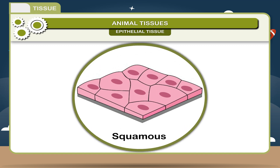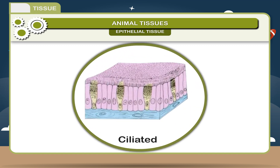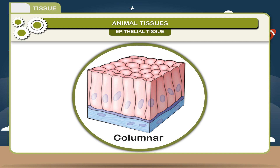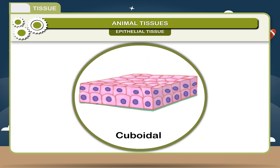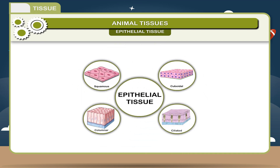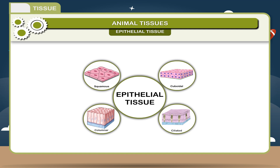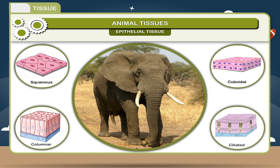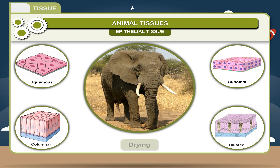The four types are: Squamous epithelium, ciliated epithelium, columnar epithelium, and cuboidal epithelium. The uppermost layer of the skin, which you see, is built of epithelial tissue. It covers the entire body of the animal and covers the internal organs. This tissue protects the underlying cells from drying, injury, and infection.